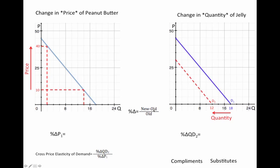If we plug those in we get this, 40 minus 10 divided by 10 and 12 minus 18 divided by 18. Those again are coming from here and here.